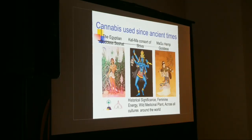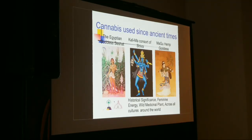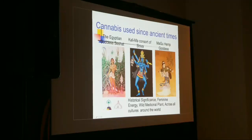The cannabis leaf headdress also has a symbolic reference to the female sex organs. Going back in time, cannabis was really associated with female energy, creation, destruction, and writing. In Indian mythology, you have Kali Ma — consort of Shiva — associated with cannabis. Kali Ma was a goddess of both creation and destruction.